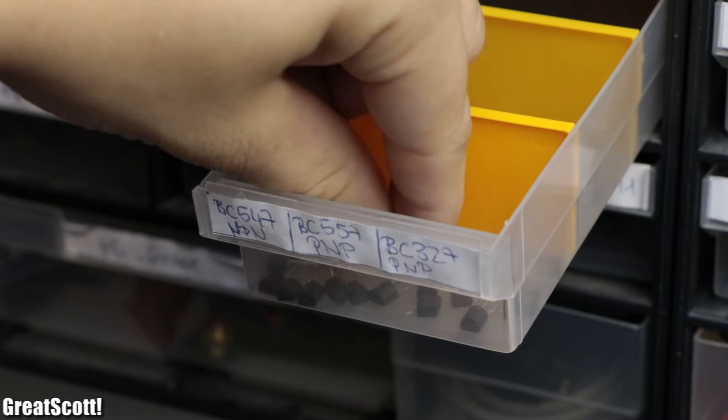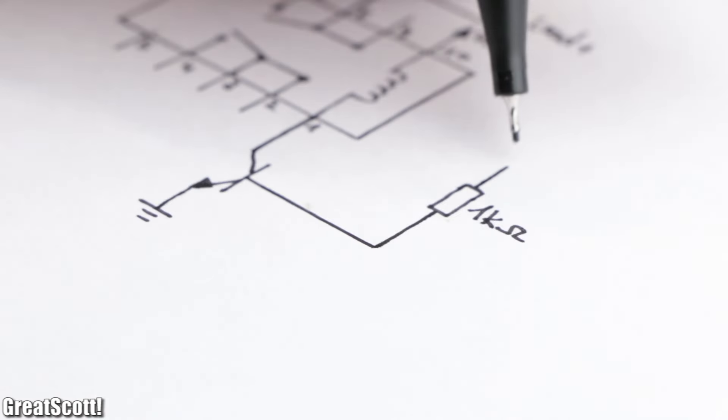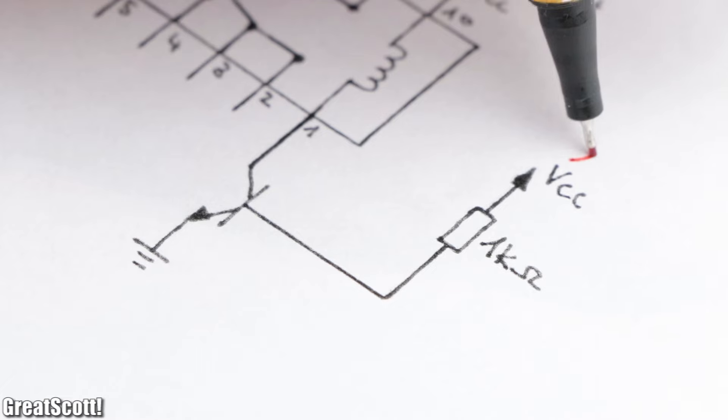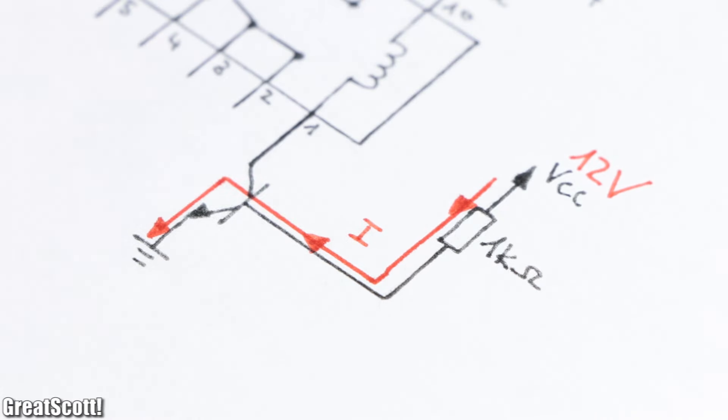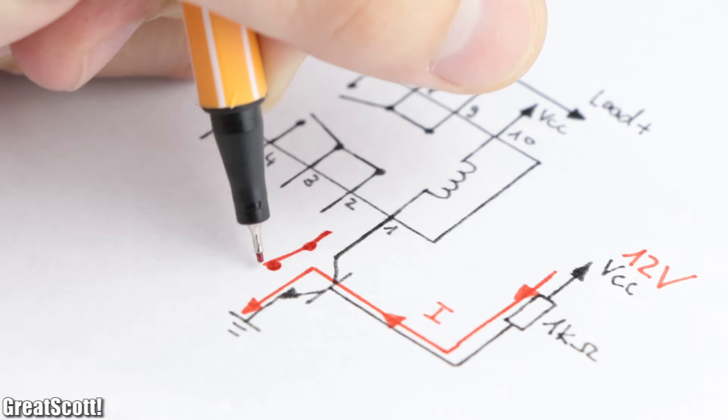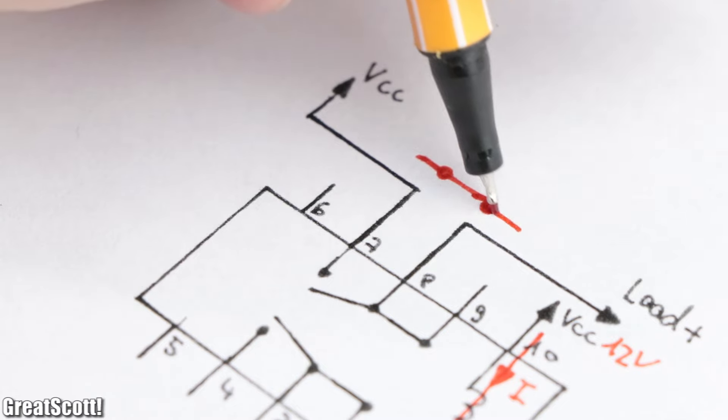For that I added an NPN transistor in series to the coil as well as a 1 kilo ohm resistor between the supply voltage and the base of the transistor. Now if voltage is applied to the circuit, current would flow through the base of the transistor which thus closes its collector-emitter path and therefore the coil is energized and the contacts close.